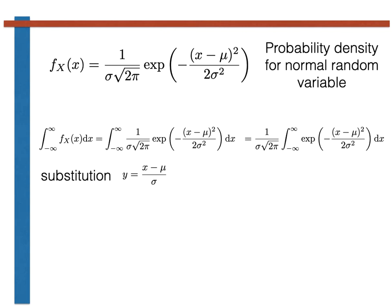The second thing we need to change is the integrand, which must be written in terms of y rather than x. (x minus mu) all squared divided by 2 times sigma squared is equal to y squared over 2. So e to the minus (x minus mu) all squared over 2 sigma squared in the current integrand will become e to the minus y squared over 2. The final change is to change the infinitesimal, i.e. the dx. To do this, we note that dy/dx equals 1 divided by sigma, so we can write dx equals sigma times dy.